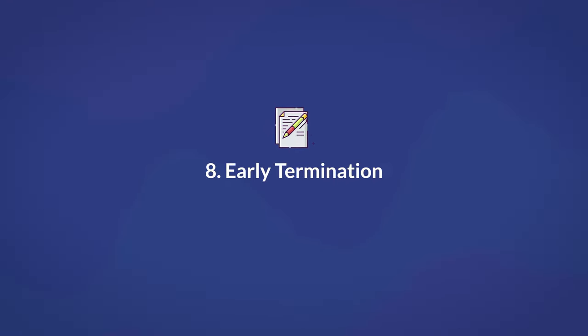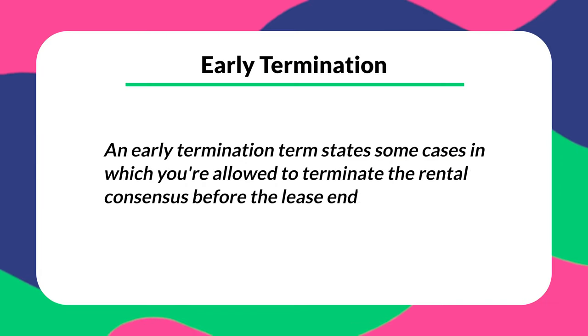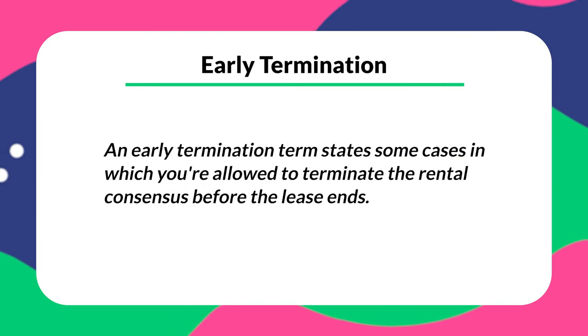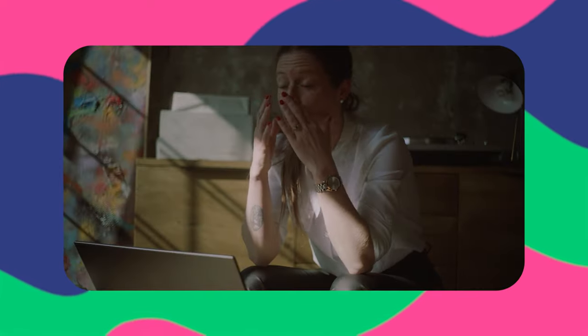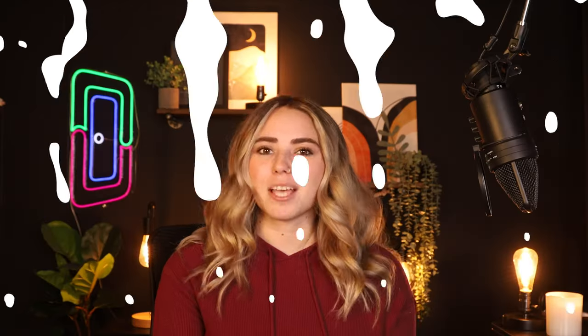Number eight is early termination. An early termination term states some cases in which you're allowed to terminate the rental agreement before the lease ends. Normally these cases refer to breaches in the document's terms. This severs the relationship between the two parties, discontinuing the responsibilities stated in the agreement.